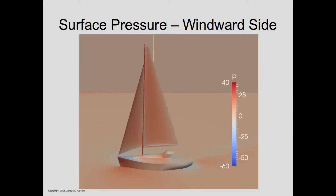Here's a side view of the same sail configuration, close-hauled on a port tack. Both the mainsail and jib are at elevated pressure. The darkest regions are right up near the leading edge of the jib, but both sails are completely pressurized — a sign of good sail trim where all of the sail surface is working for us.